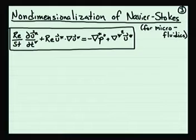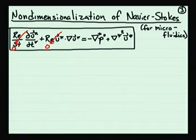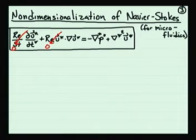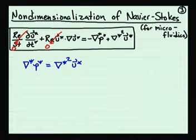For a microfluidic flow, we expect the Reynolds number to be small because the length scales and characteristic velocities are small. In that case, we can neglect the two terms on the left-hand side — unless the boundary conditions are changing so quickly that the Strouhal number cancels out the effect of the Reynolds number on the first term. Once we eliminate those first two terms, the simplified form of the Navier-Stokes equations is known as the Stokes equations.